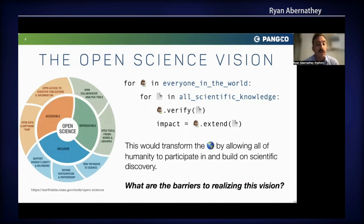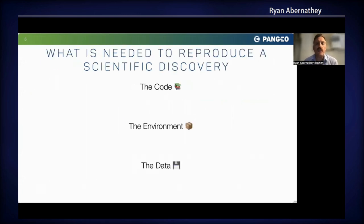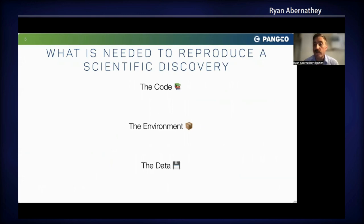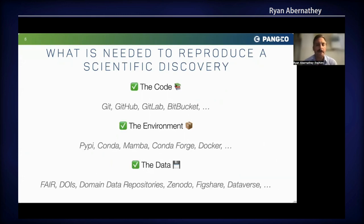There are many social and political barriers to this vision, but here I'm going to focus on the technical barriers. What's really needed to reproduce a scientific discovery? We tend to think about reproducibility in terms of three main elements: the code that was used to create the discovery, the environment where that code was run, and the data that went into that discovery. I think we're actually in a pretty good place in terms of tools for reproducibility compared to where we were 10 years ago.